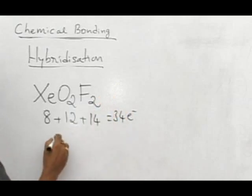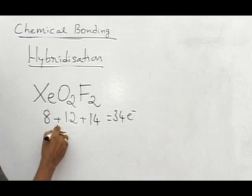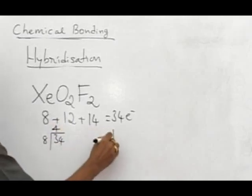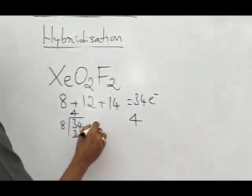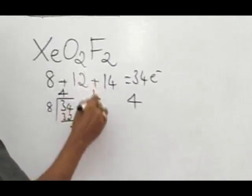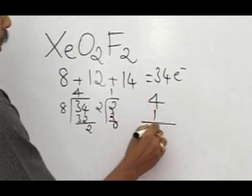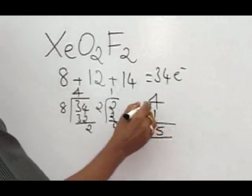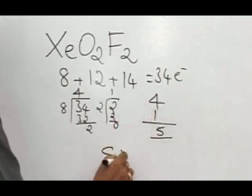Now 34 should be divided by 8 first. Now we have the quotient 4, so note the quotient 4 first, so now 32, remainder 2. 2 should be divided by again 2, now again one more quotient we obtain, so that 1. So 4 plus 1, 5, so we have 5 hybrid orbitals, that is given by sp3d.